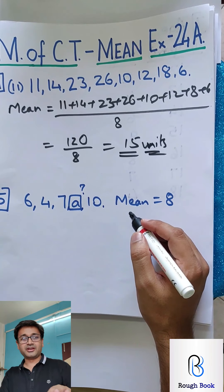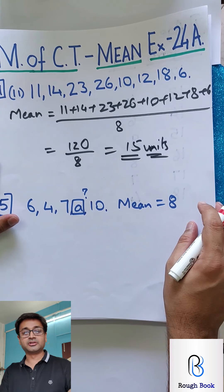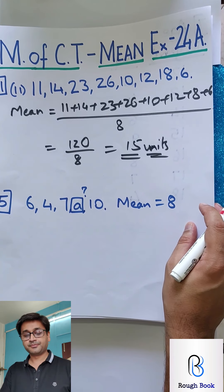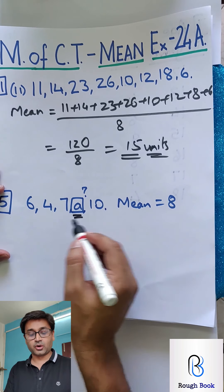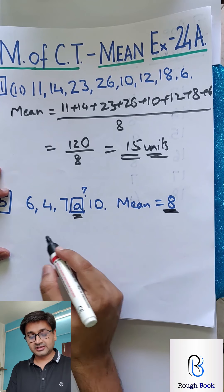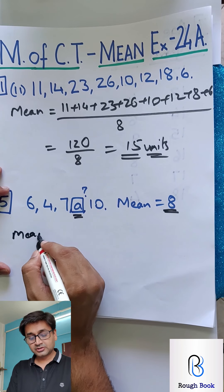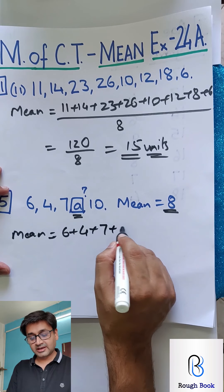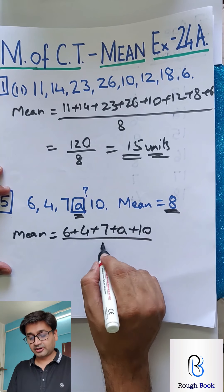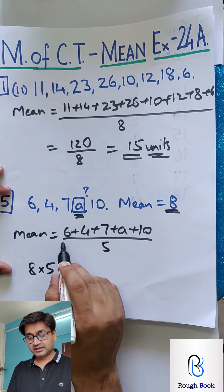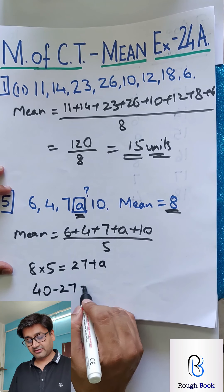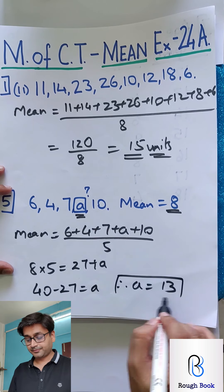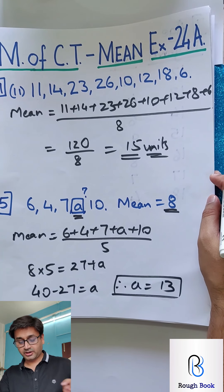Such a type will never come in the exam. The next one has one missing variable. This is the easier one because it is raw data. The mean is already given, so let us calculate the missing variable. It is going to be 6 plus 4 plus 7 plus 8 plus 10 — 5 values — divided by 5. So 8 into 5 equals 40; 6 plus 4 is 10, plus 20, plus 27 plus A. This gives 40 minus 27, so A equals 13.